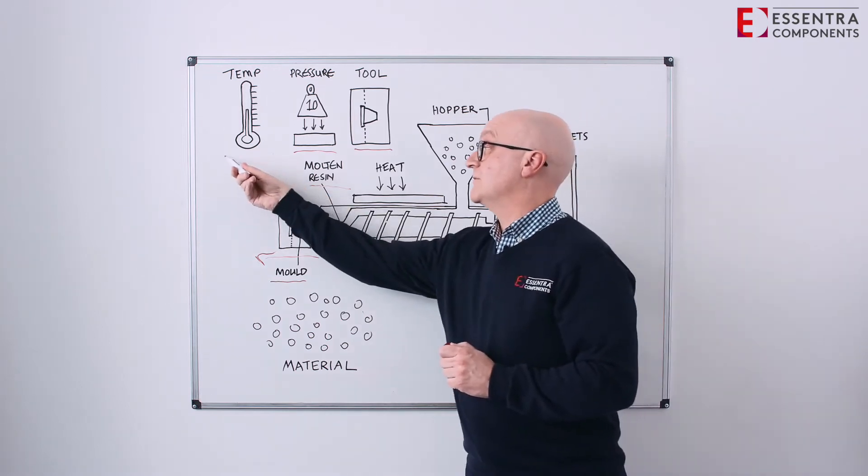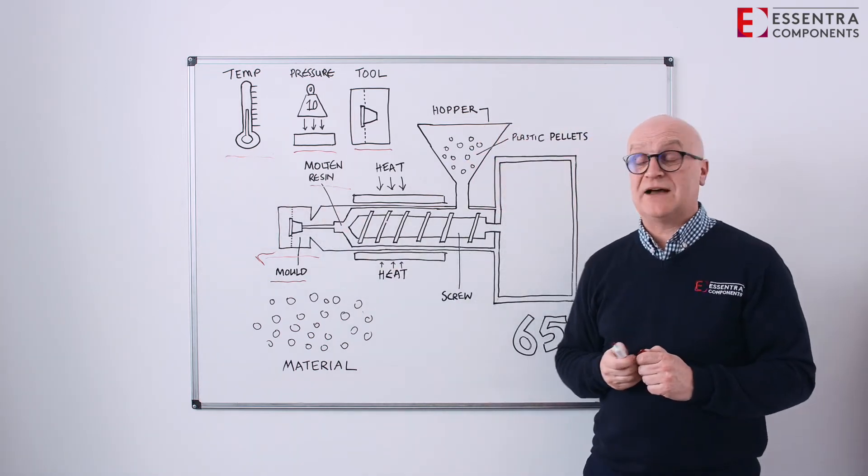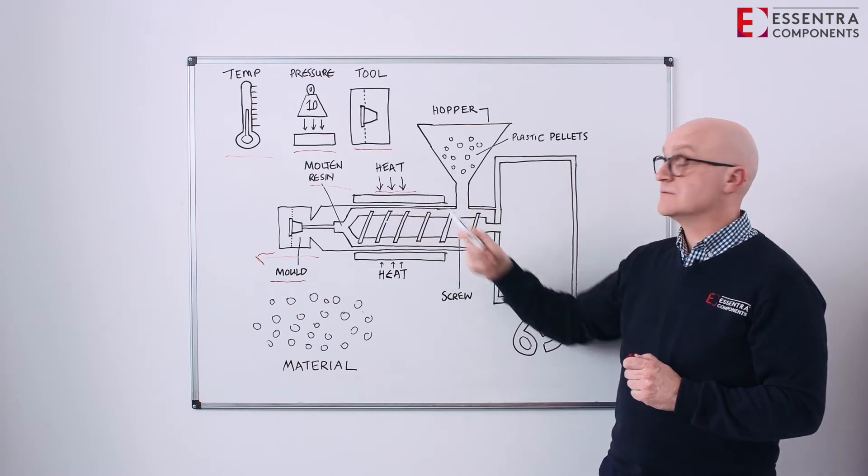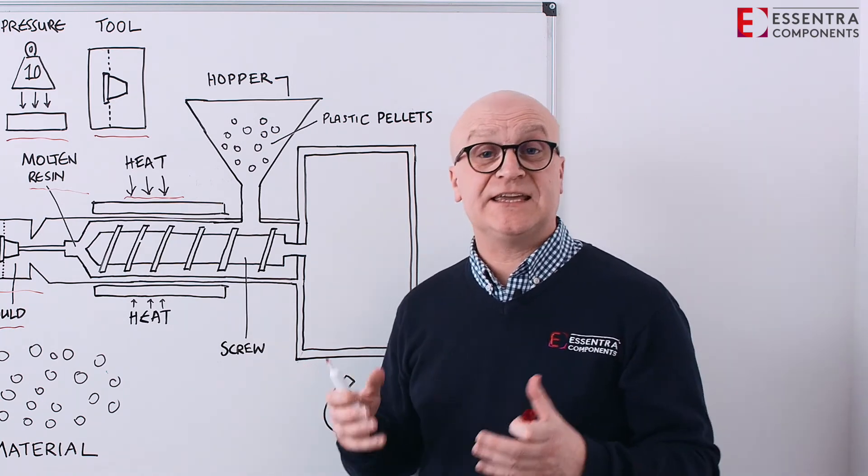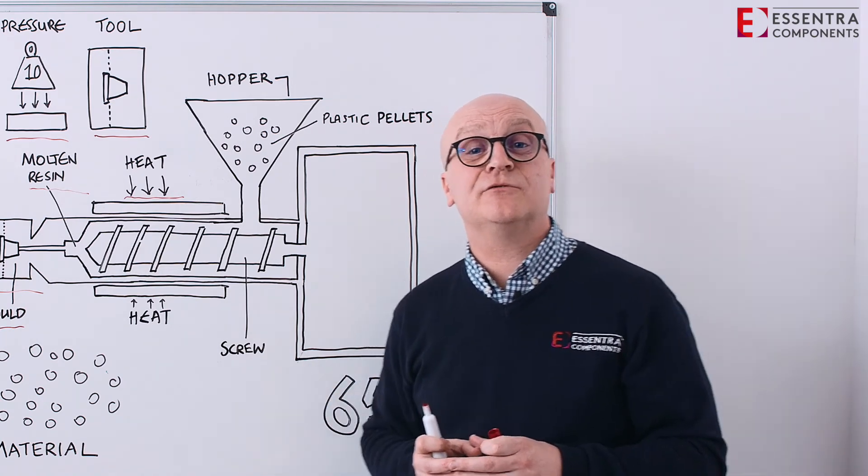We also have temperatures. We have our barrel temperatures, and we also have what we call back pressure, which causes shear heat in the material. This helps the material flow.